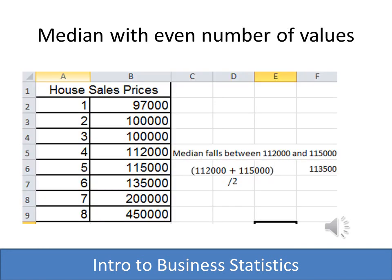With this example, I've added a house to our data set, so we have an even number of houses — it's not quite as simple. There is no one value where an equal number fall above and below. So in this case, we actually take the two middle values — the center point would be between four and five. The value for four is 112,000 and the value for five is 115,000. We add the two together, divide by two, and we come up with the median of 113,500.